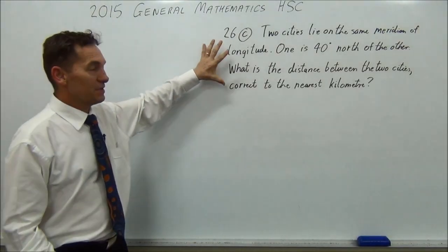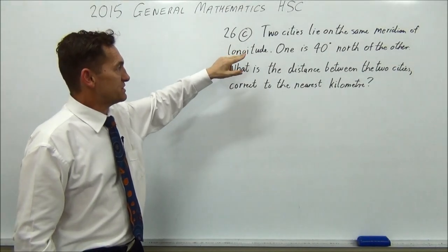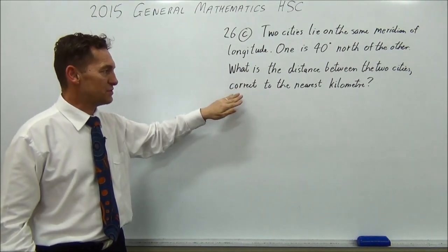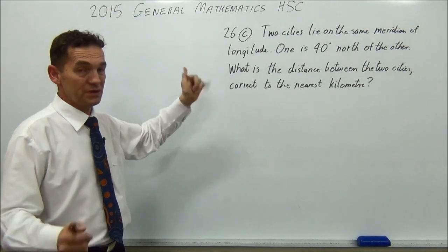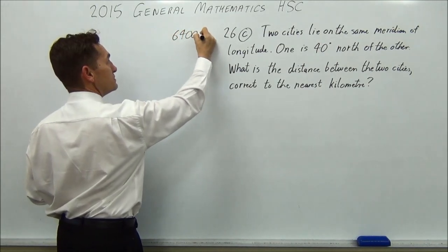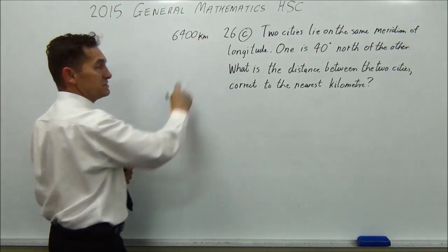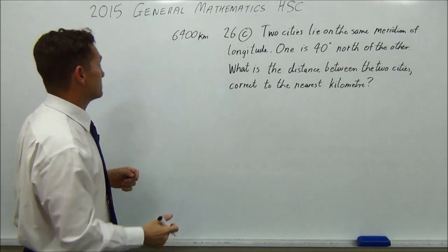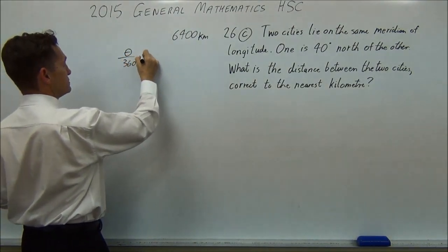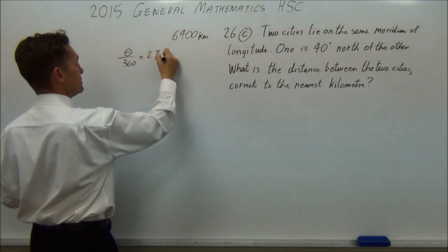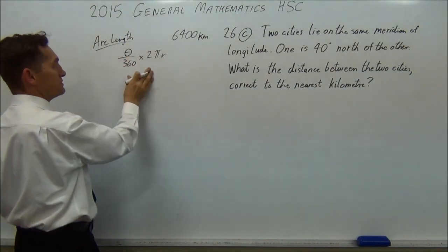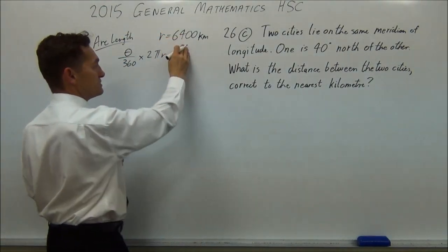G'day again. 26E, a lot shorter this time. Two cities lie on the same meridian of longitude. One is 40 degrees north of the other. What is the distance between the two cities, correct to the nearest kilometre? Pretty straightforward question. You only need to look up two things on your formula sheet. One is, it tells you the radius of the earth is 6400 kilometres. Next thing you need to look up is the arc length, which is theta over 360 times 2 pi r. Okay, so you need that formula, and you need that, that's the radius of the earth.